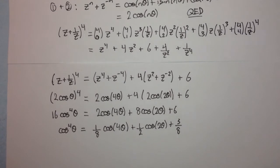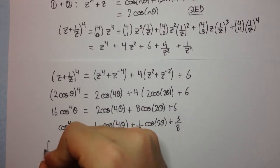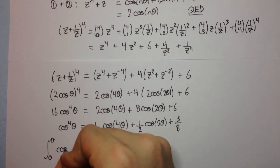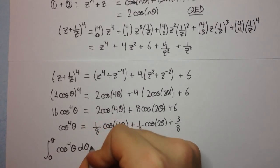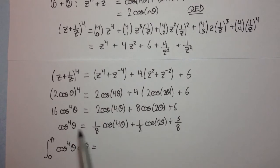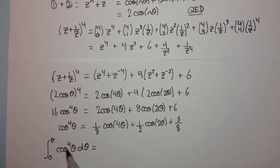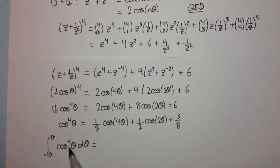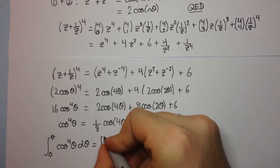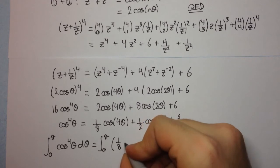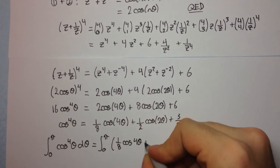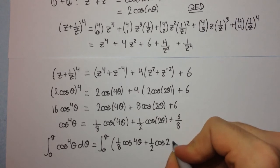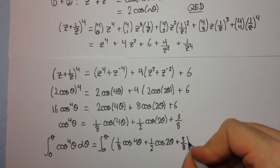The next part asks us to integrate cos^4θ from 0 to π. We use the formula we just derived since cos^4θ is not a standard integral on its own. So the integral becomes the integral from 0 to π of (1/8)cos(4θ) + (1/2)cos(2θ) + 3/8 dθ.